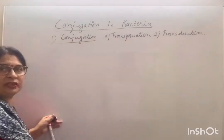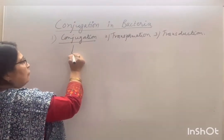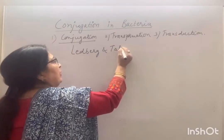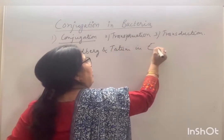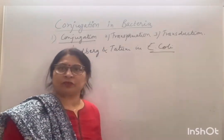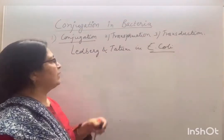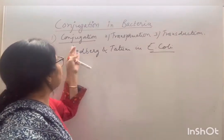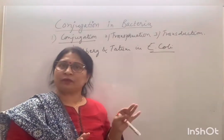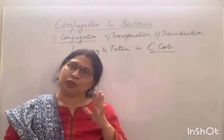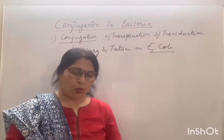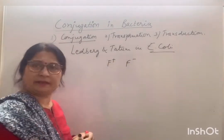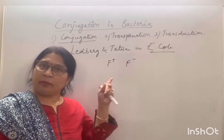Today I will be taking up conjugation. Conjugation was first discovered by Lederberg and Tatum in E. coli bacteria. Conjugation means the bacteria is dimorphic — it contains two types of cells: one is F-plus and another is F-minus.